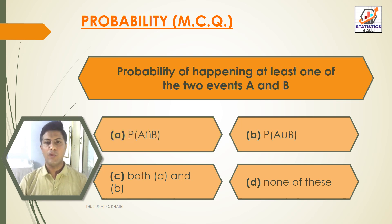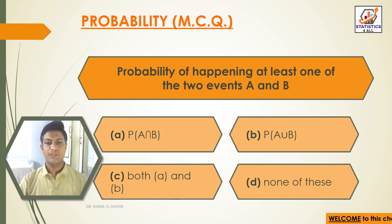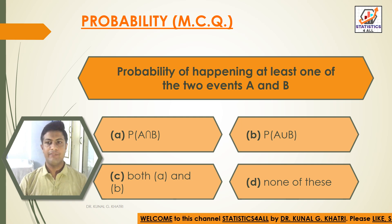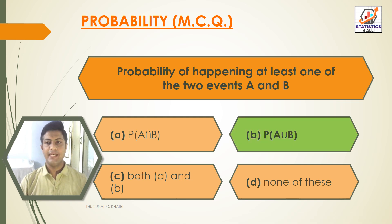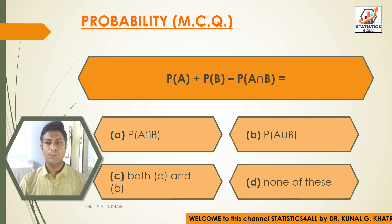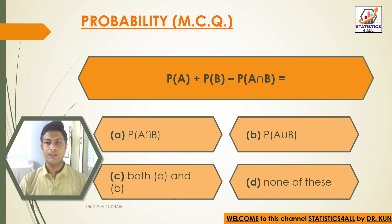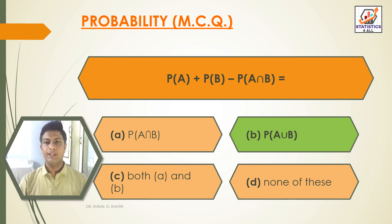Question 9: Probability of happening at least one of the two events A and B. Option A: P(A∩B). Option B: P(A∪B). Option C: Both A and B. Option D: None of these. Answer: Option B — P(A∪B) = P(A) + P(B) − P(A∩B).